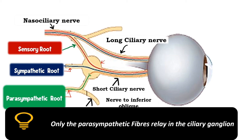Although the ciliary ganglion has a sensory root, sympathetic root, and parasympathetic root, it is only the parasympathetic fibers that are going to relay in the ciliary ganglion. This makes sense because the ciliary ganglion is a parasympathetic ganglion, and therefore only the parasympathetic fibers coming from the Edinger-Westphal nucleus are going to relay here.